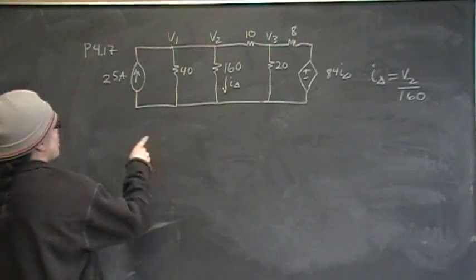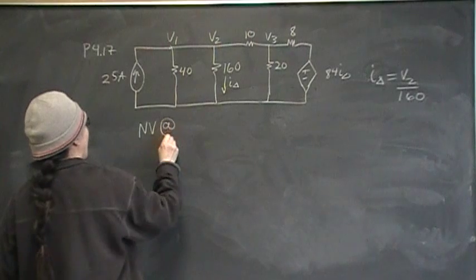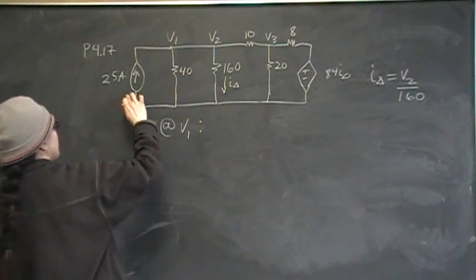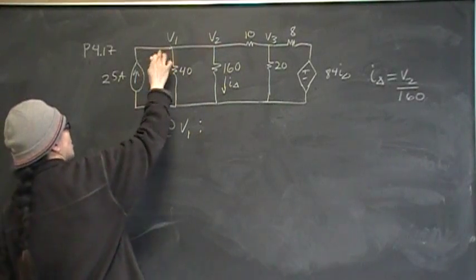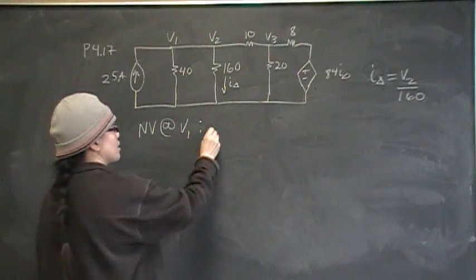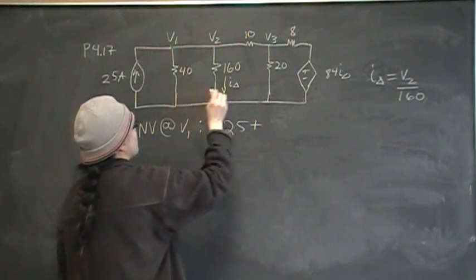So then I started writing my equations. I said, okay, well, the node voltage at V1, that's going to be, I've got 25 amps going into the node, current into the node is negative, so that's going to be negative 25 plus then V1 over 40.